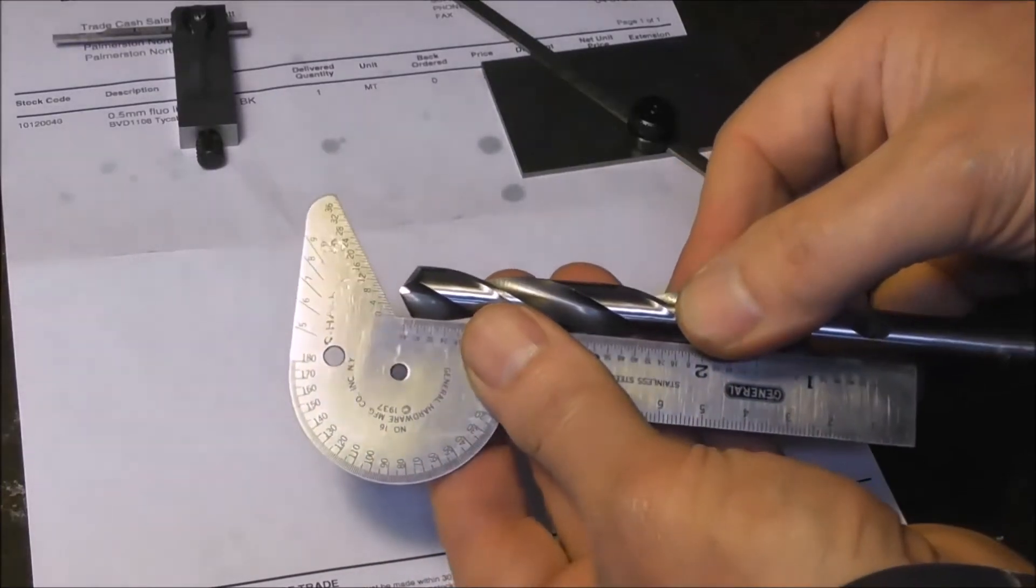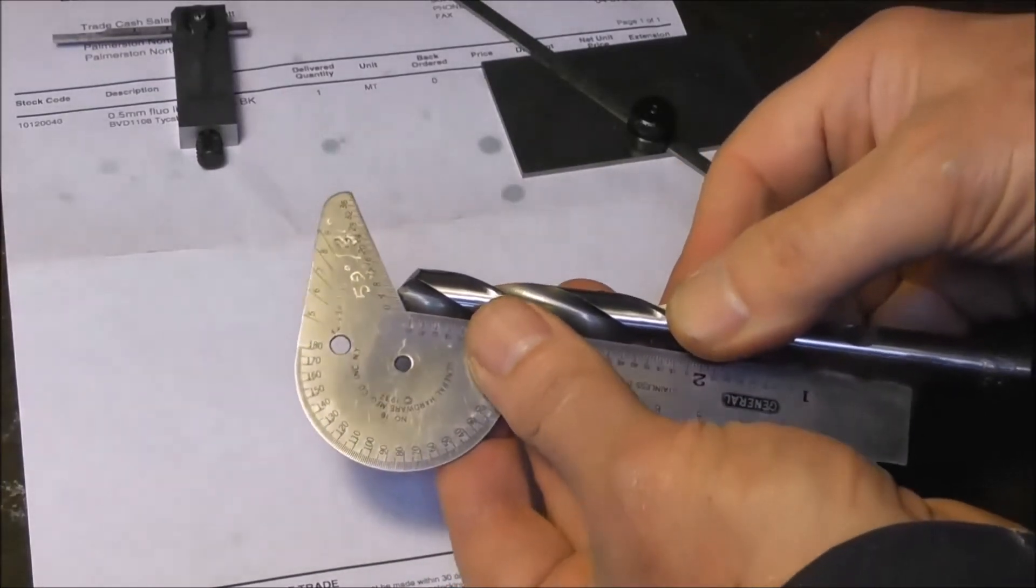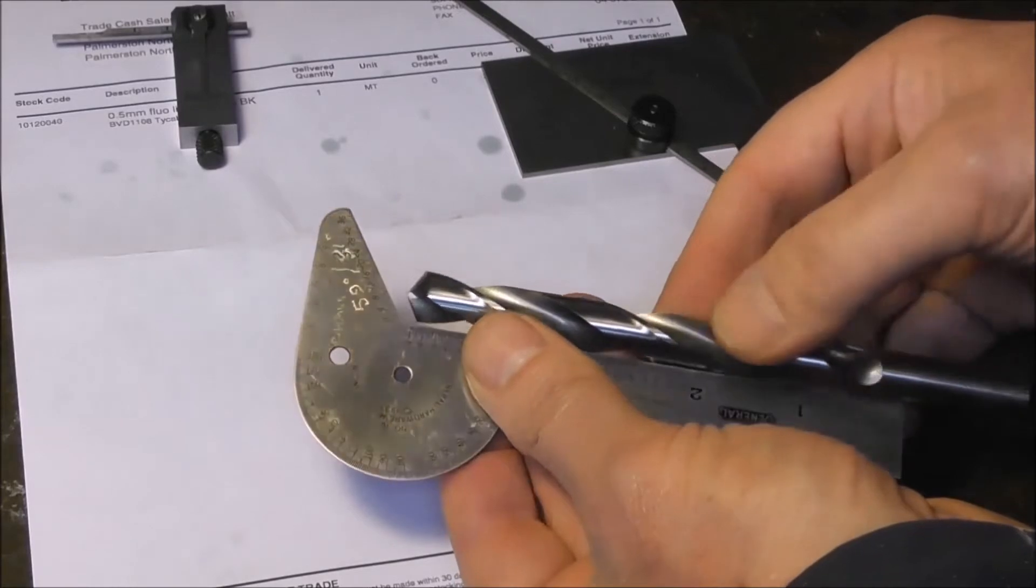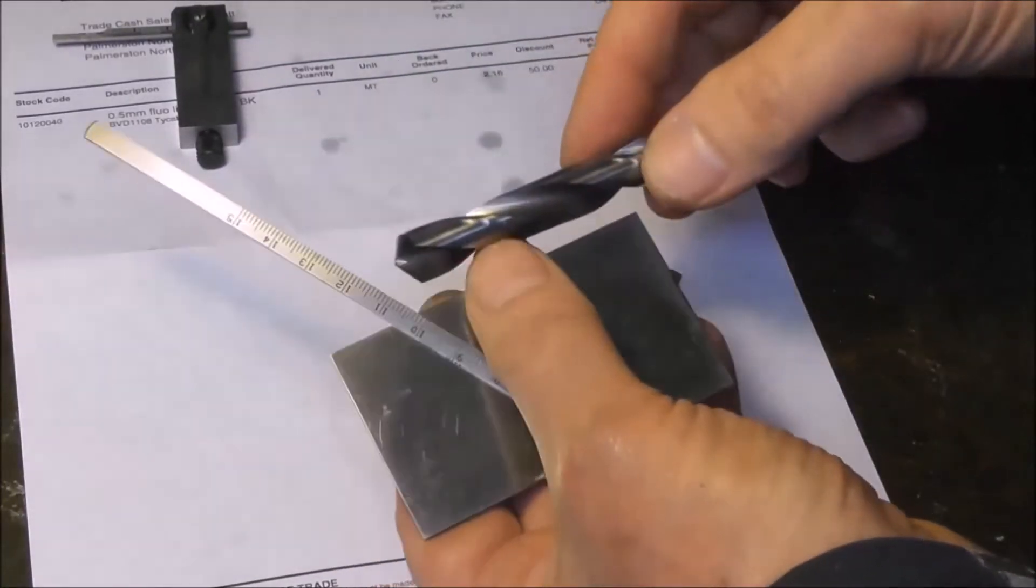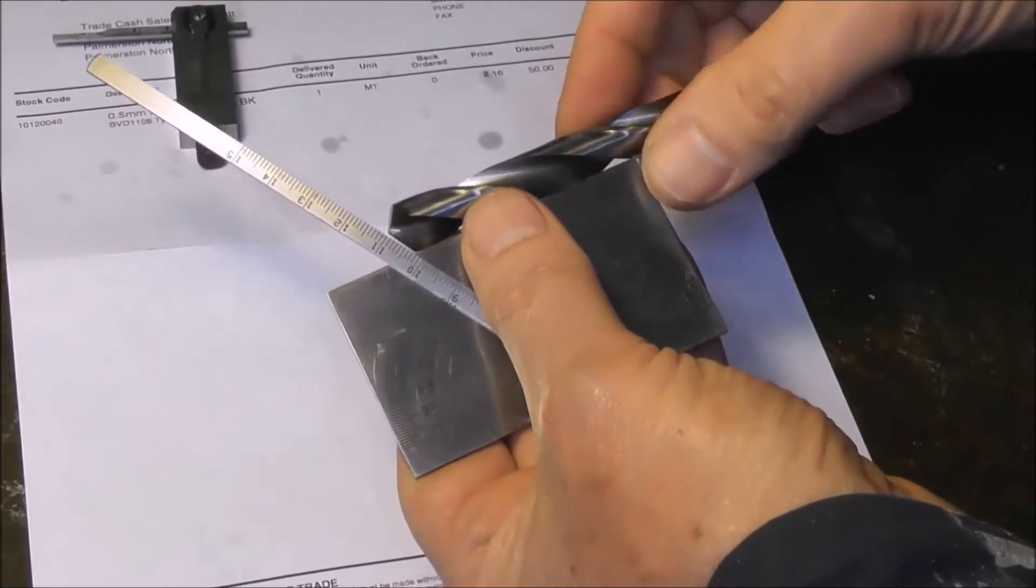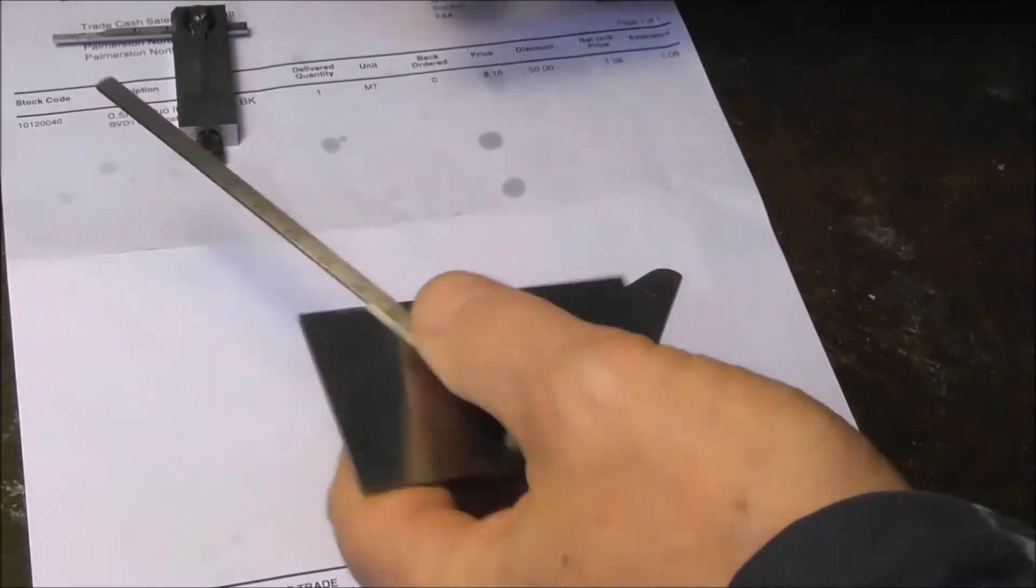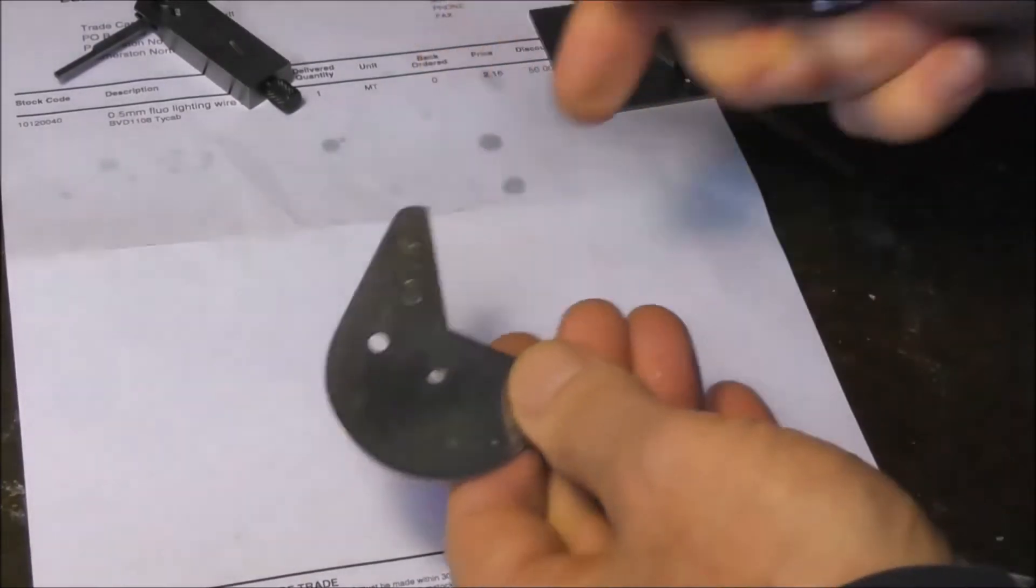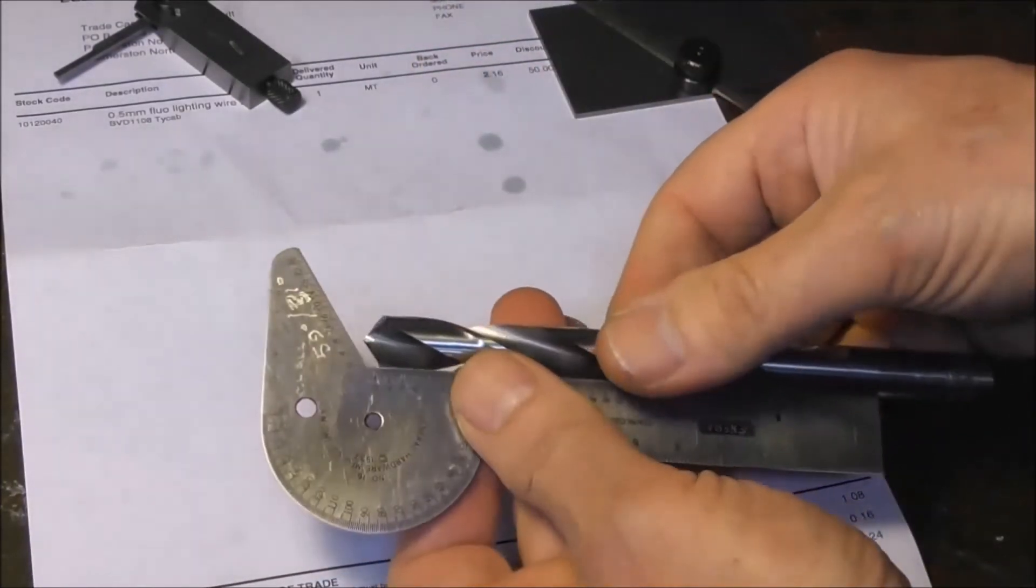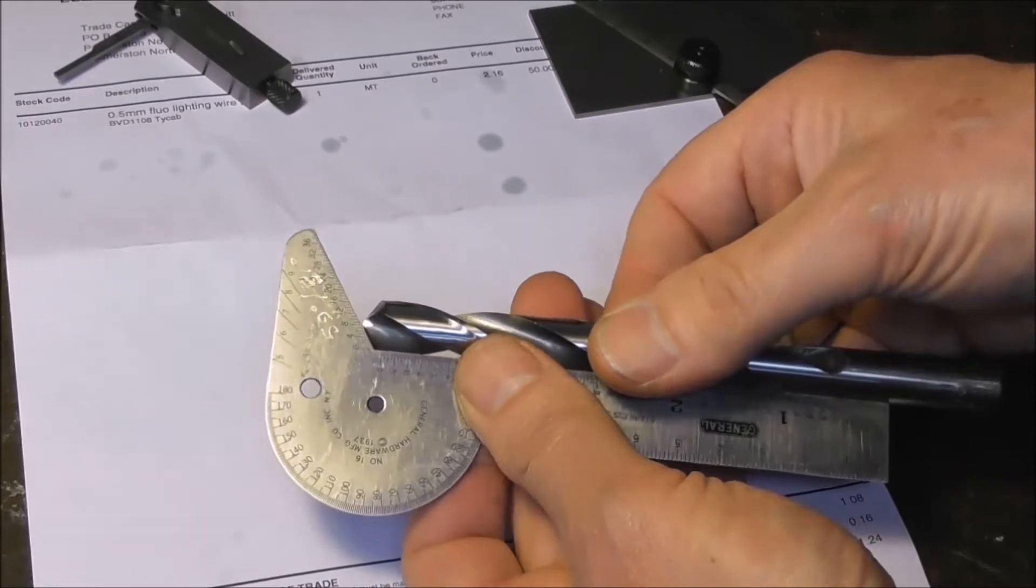You can use a gauge like this to measure the angle and whether or not the point is central. The key thing here is that the angle is typically 59 degrees a side, or 118 degrees total.